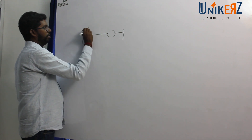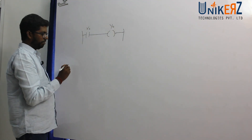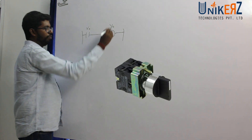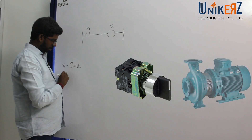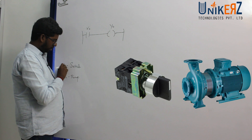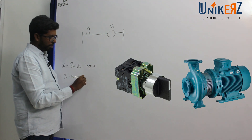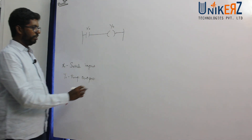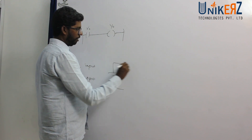Let's explain: this is one input and this is one output. X0 is one switch — that is the input. Y0 is one switch — that is the output. The switch is the input; the pump is the output.